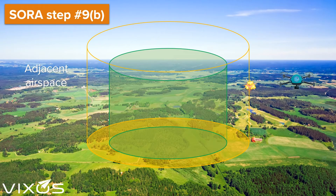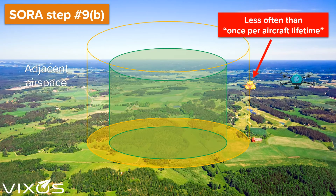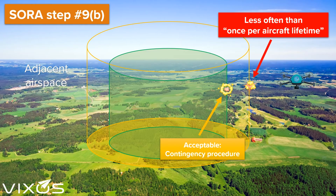Step 9 part B says that this should happen less often than once per aircraft lifetime. What is aircraft lifetime and how can something happen less than once? The short answers are: somewhere between 100 and 1,000 hours, and things can happen less often than once, at least in the sense of averaged probabilities. You can find the longer answers in our instructional video on probabilities. By the way, leaving the flight geography is perfectly fine, as long as you have appropriate contingency procedures to handle this event.